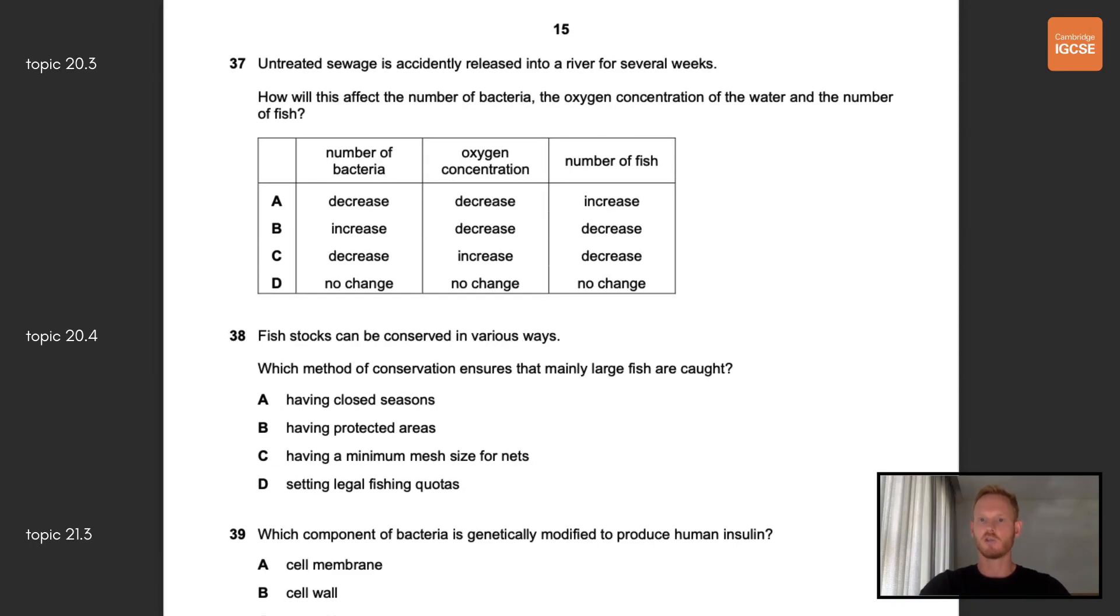Number 37, untreated sewage is accidentally released into a river for several weeks. How would this affect the number of bacteria, the oxygen concentration of the water, and the number of fish? This question relates to the process of eutrophication. The sewage provides an excess of ions to the algae in the water, which grow rapidly. When the algae die they're broken down by decomposers, namely bacteria, so the number of bacteria increases. Decomposition uses up oxygen, so oxygen concentration decreases, which results in the death of fish and other organisms that rely on oxygen for survival. The correct answer is therefore B.